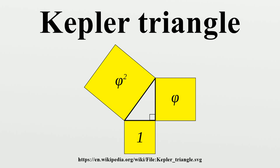Constructing a Kepler triangle: A Kepler triangle can be constructed with only straightedge and compass by first creating a golden rectangle. Construct a simple square and draw a line from the midpoint of one side of the square to an opposite corner.